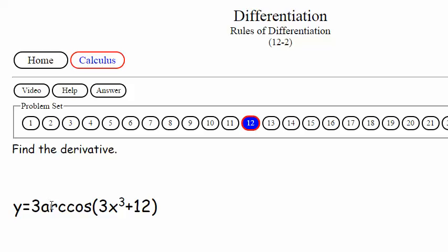Y is equal to three arc. I think I've been using a capital ARC. Doesn't matter. Cosine of three X and I think I'm running out of ink again. This is getting ridiculous. Okay, we got that.